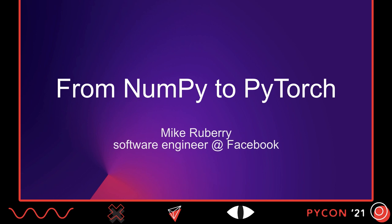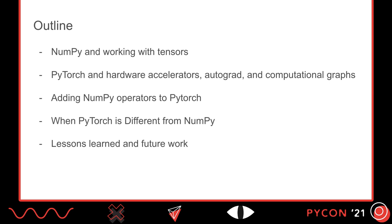Here's the talk outline — it's got five parts. In the first part, we'll have a couple minutes on NumPy and operating on tensors. Then we'll talk about PyTorch, hardware accelerators, autograd, and computational graphs. Using that context, we'll look at how NumPy operators have been and continue to be added to PyTorch. Then we'll talk about a few places where PyTorch is different than NumPy and why we think that's okay, and we'll finish with lessons learned from adding these operators and planned future work.